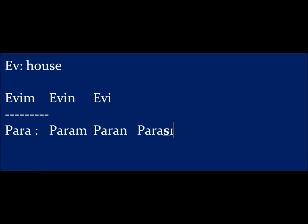So: 'param' (my money), 'paran' (your money), 'parası' (his/her money). For those wondering, it goes: 'paramız' (our money), 'paranız' (your money — plural), 'parası' (their money). The S is used only when we're talking about his, her, or its possession — and the possessed word ends in a vowel.